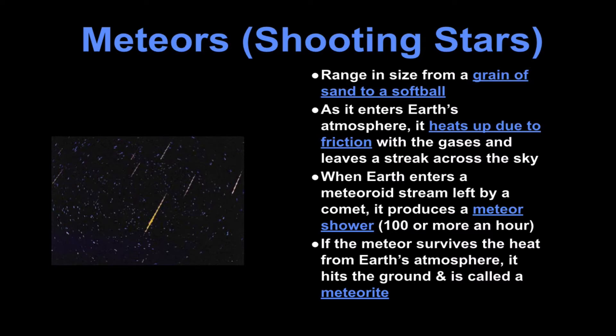And if a meteor survives the heat from Earth's atmosphere or from re-entry it hits the ground and is called a meteorite. So it's a meteor while it's going through the sky. Meteorite if it hits the ground.